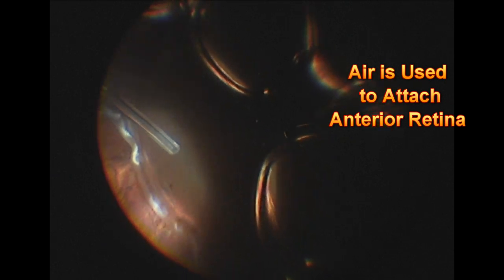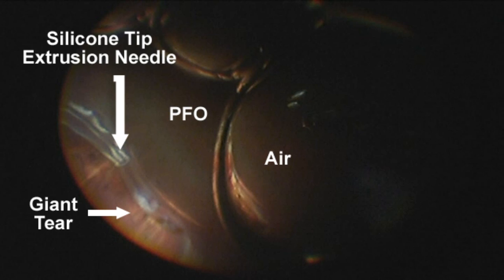Air is being infused from the right side of your screen while the perfluoron holds the retina in place posteriorly, and that small silicone tipped cannula is being used to aspirate the subretinal fluid and the other fluids from the eye that were used during the surgery.